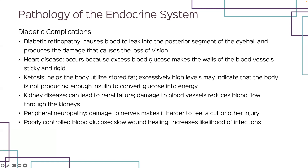Diabetic complications — referred to as diabetic manifestations in ICD-10 — include retinopathy, which causes blood to leak into the posterior segment of the eyeball and can cause vision loss. Heart disease occurs because excess blood glucose makes the walls of blood vessels sticky and rigid, so they tend to clot more easily. Ketosis indicates excessively high levels suggesting the body is not producing enough insulin to convert glucose into energy. Kidney disease can lead to renal failure. Peripheral neuropathy is nerve damage. Poorly controlled blood glucose causes slow wound healing and increases the likelihood of infections such as gangrene.